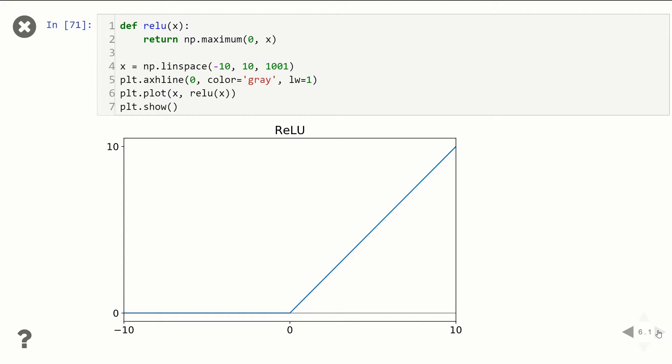And if the input is positive, then the output is going to be the same value as the input. So it's zero centered. If we have an input of zero, we get an output of zero. And the main advantage of this is it doesn't have a vanishing gradient.